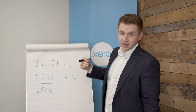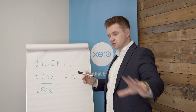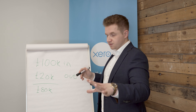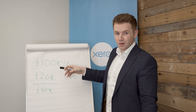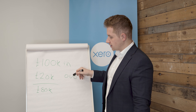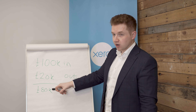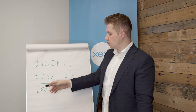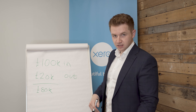Throughout the year you've needed some money to live off. You're not taking any salary or dividends — see my other videos for that — but you've taken £20,000 out as a repayment of your directors loan account. So your company now owes you £80,000; you've got a directors loan account balance of £80,000.